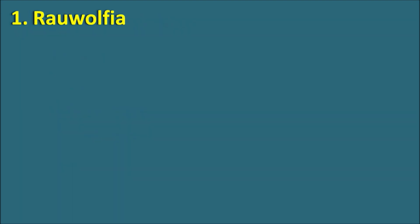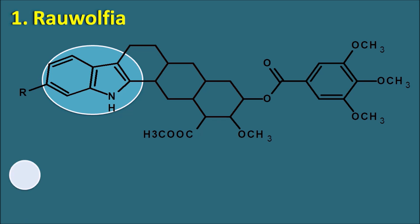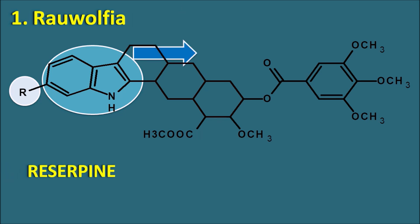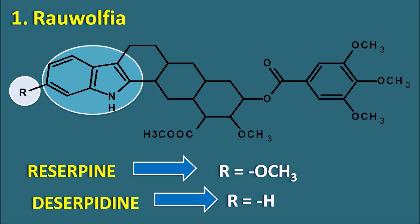First is the Ravolfia alkaloids. The structure of Ravolfia alkaloids shows a large structure including a small ring system made up of indole, which is obtained from tryptophan via tryptamine. Based on the R group, we can have different types of Ravolfia alkaloids. One important Ravolfia alkaloid is reserpine, having the R group as OCH3. A demethoxy derivative also present in the plant is deserpidine, where the R group is simply hydrogen.